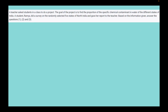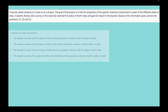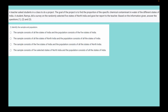Coming to the first question: a teacher asks students in a class to do a project. The goal of the project is to find the proportion of a specific chemical contaminant in water across the different states of India. A student, Ramya, did a survey on five randomly selected states of North India and gave her report to the teacher. Based on the information given, answer questions 1, 2, and 3.